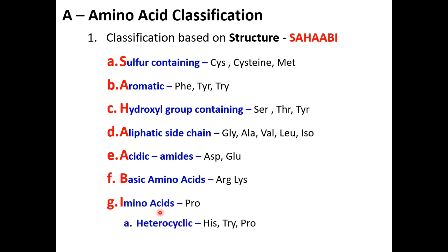There is only one amino acid, proline, which is considered an imino acid. In heterocyclic amino acids, tryptophan, proline, and tyrosine are included. So classification based on structure covers: sulfur-containing, aromatic, hydroxyl group, aliphatic, acidic, and basic amino acids.